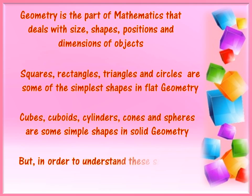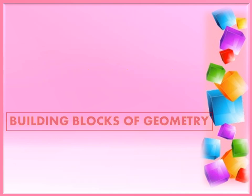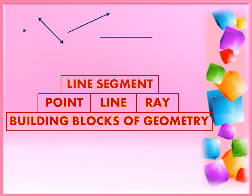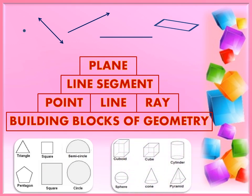But in order to understand these shapes, you must first learn about the building blocks of geometry. The building blocks of geometry are point, line, ray, line segment and plane. They help us to study about plane figures like square, rectangle, triangle, circle and polygons, and also about solid figures like cube, cuboid, cylinder, cone and sphere.